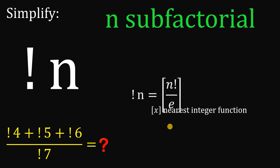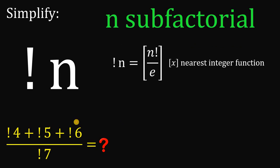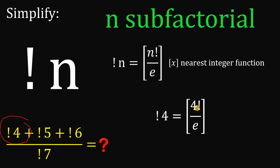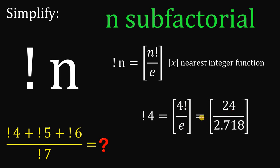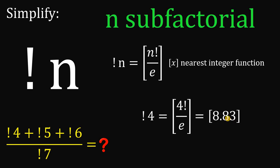Using this formula, we can find 4 sub-factorial. It equals the greatest integer value of 4 factorial over e. Since 4 factorial is 24 and e is approximately 2.718, we get 24 divided by 2.718, which gives us approximately 8.83. The nearest integer from 8.83 is 9, so 4 sub-factorial equals 9.